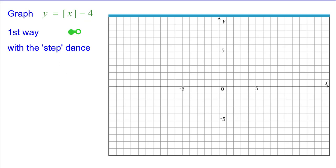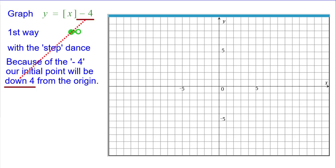The first way we're going to use is what we call the step dance. Because of the minus 4, our initial point will be down 4 from the origin, which will be at (0, -4), so we need to place the step there at (0, -4).